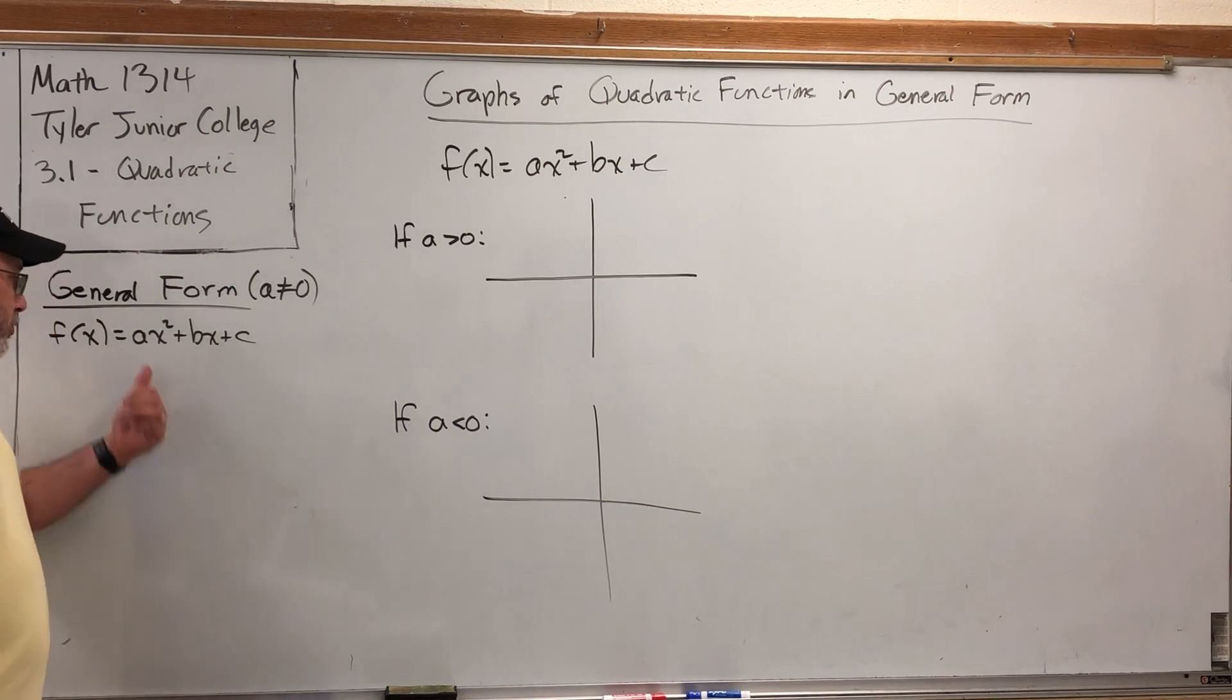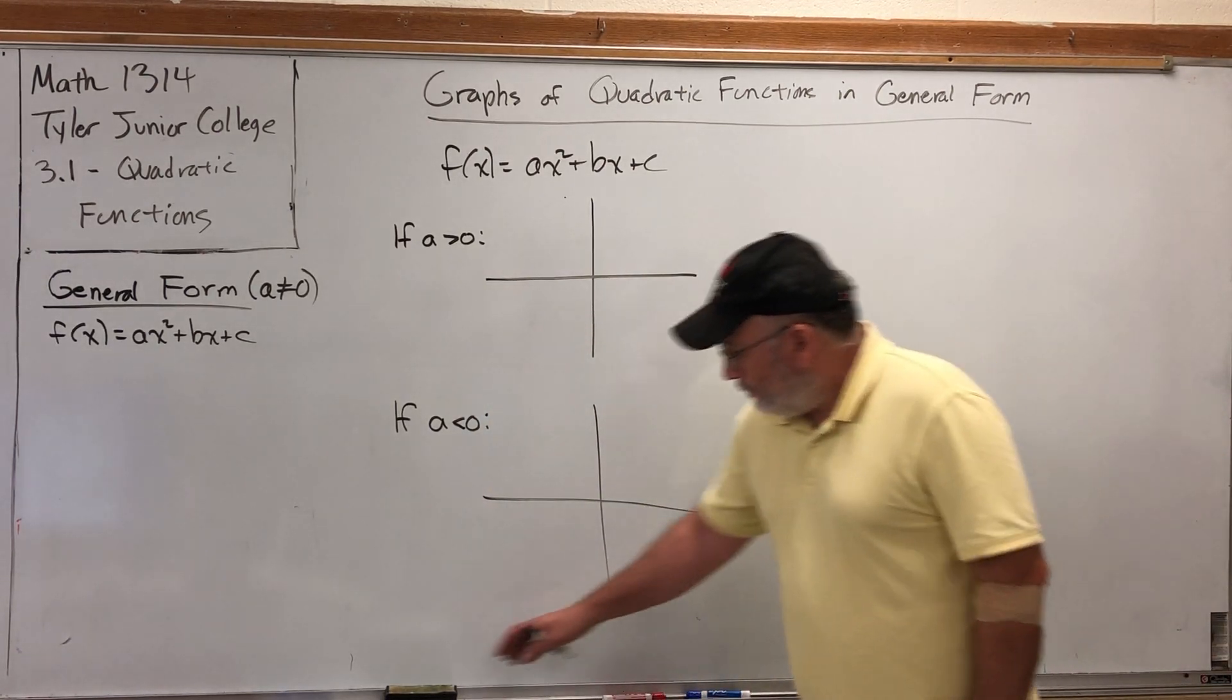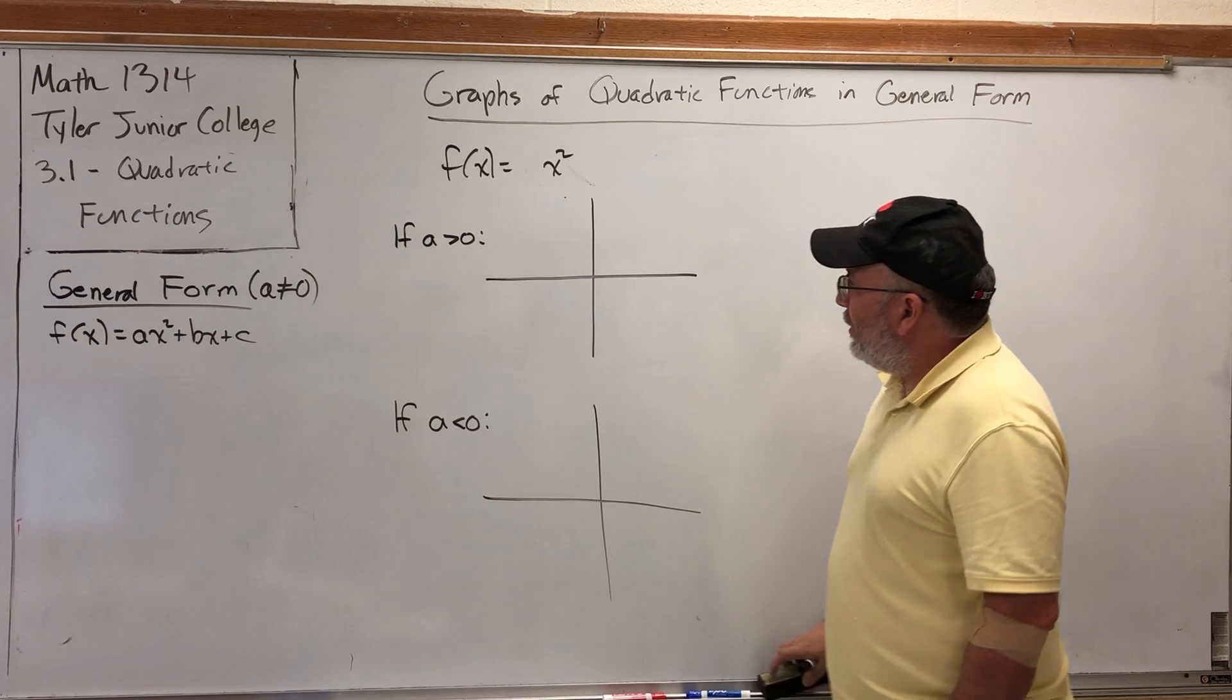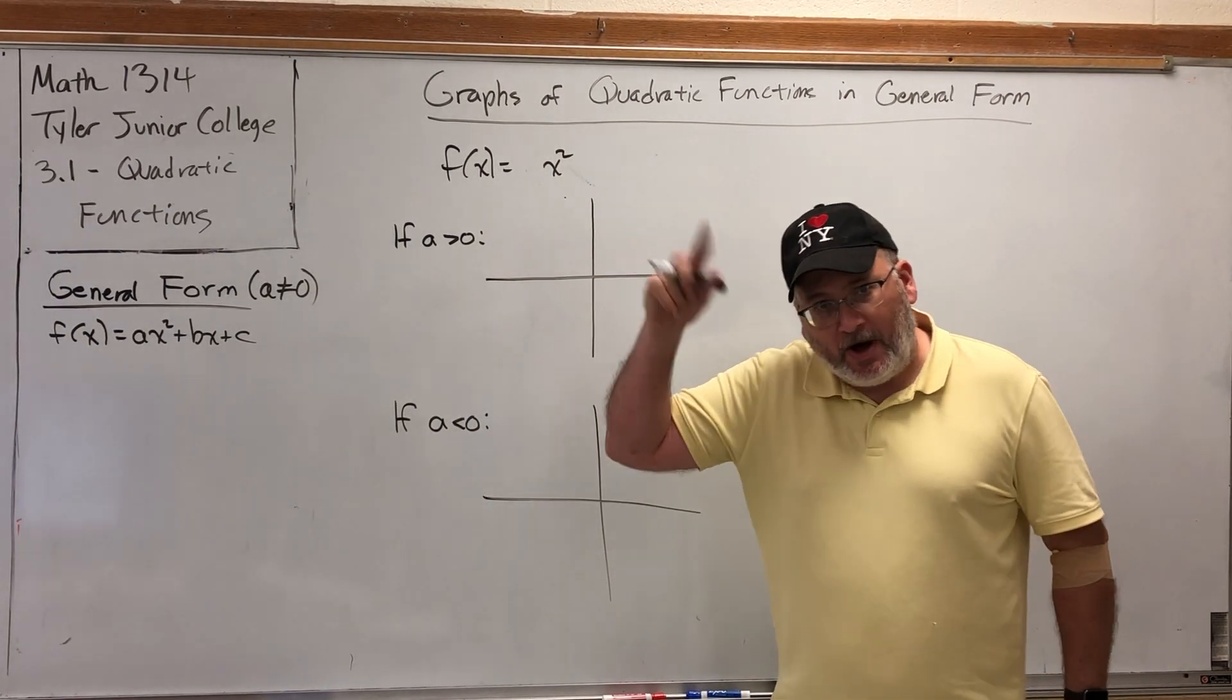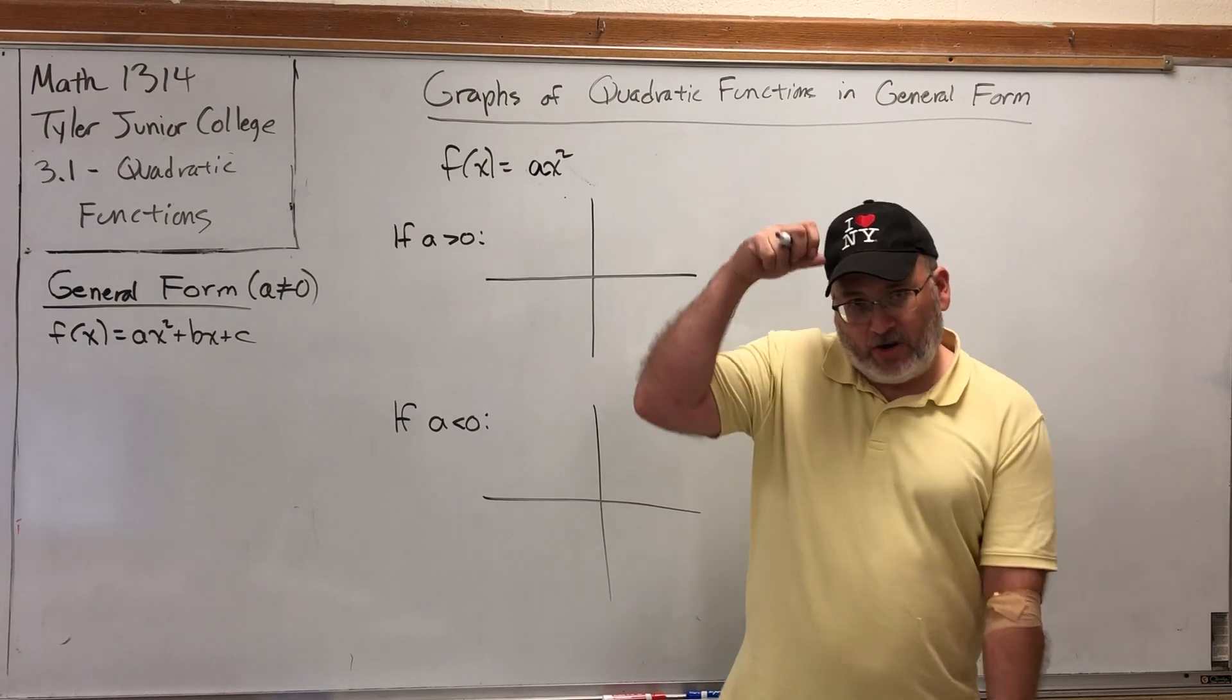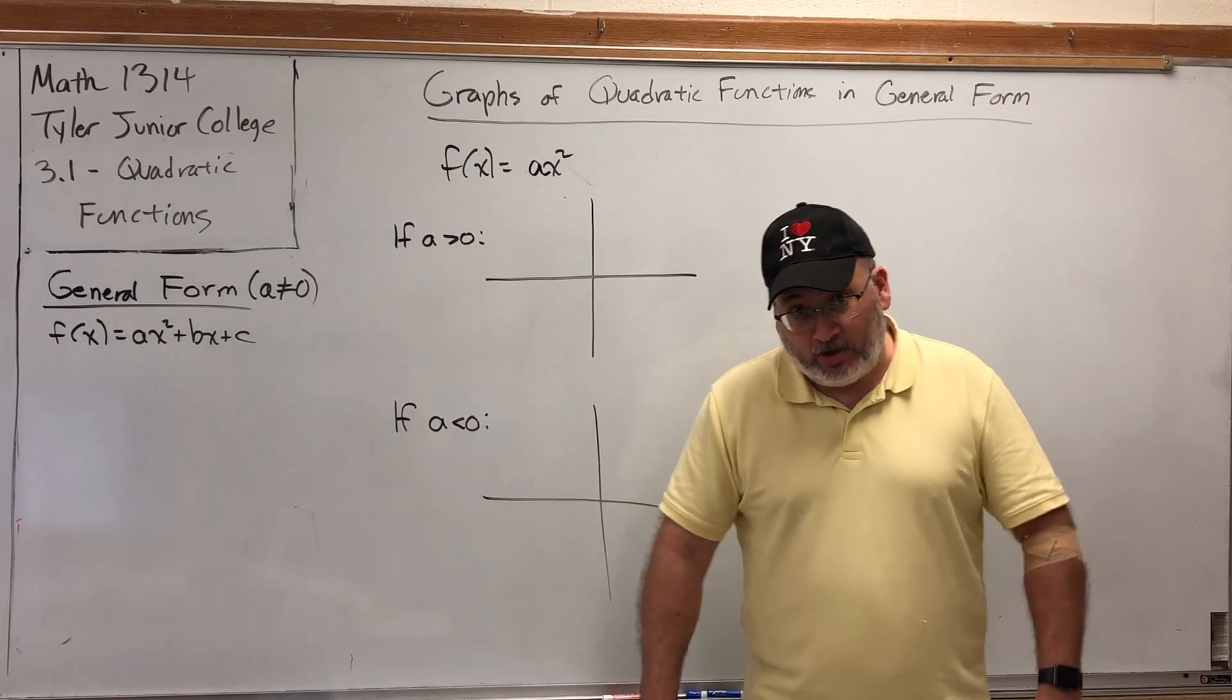What do we already know about these? If we didn't have the bx and c terms, we already know that the graph of f(x) = x² is a parabola that opens up and bottoms out at the origin. If we put a number in front of it, that invokes a vertical stretch or shrink, but if the number is negative, it reflects across the x-axis.